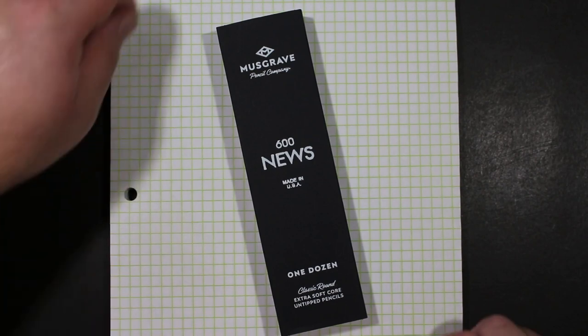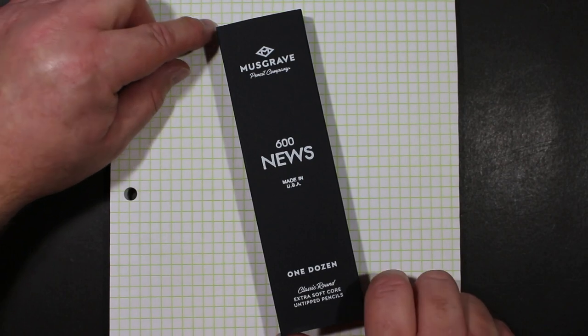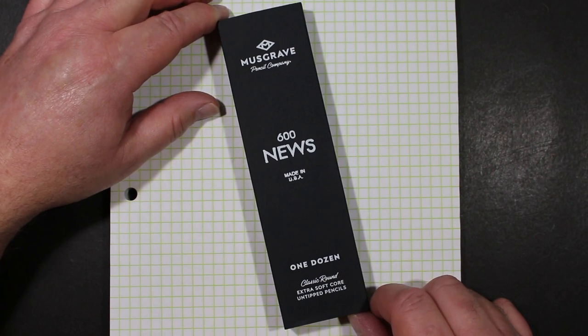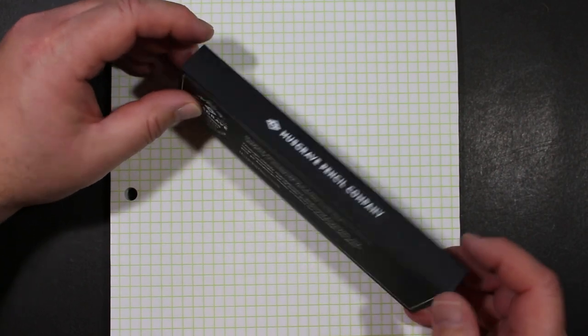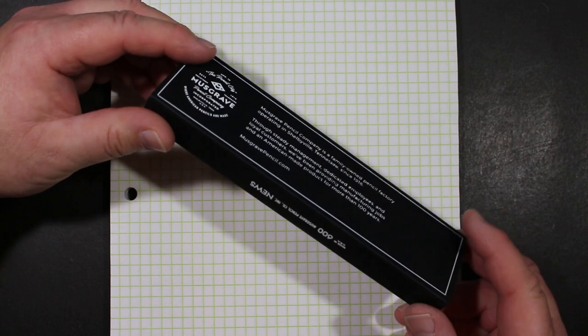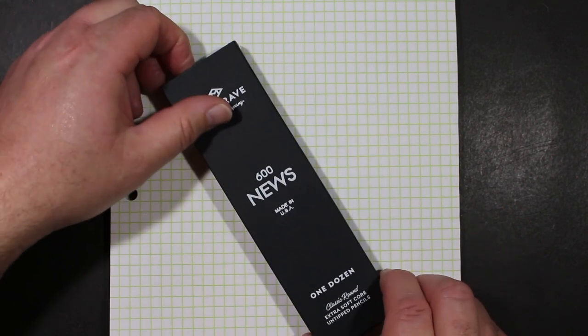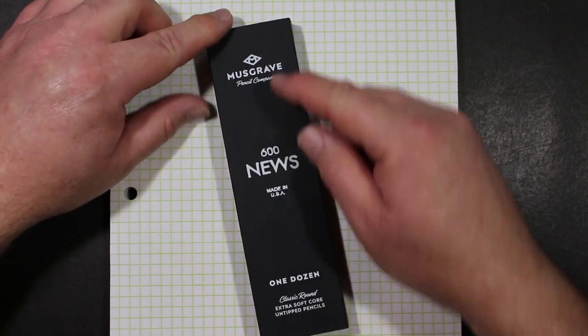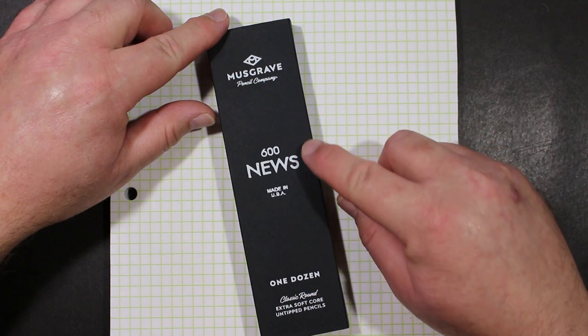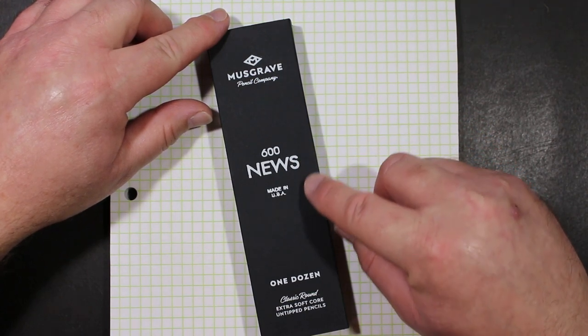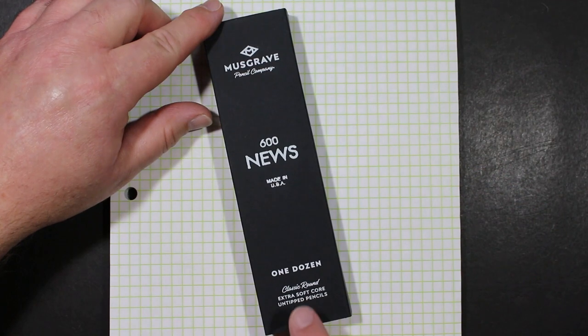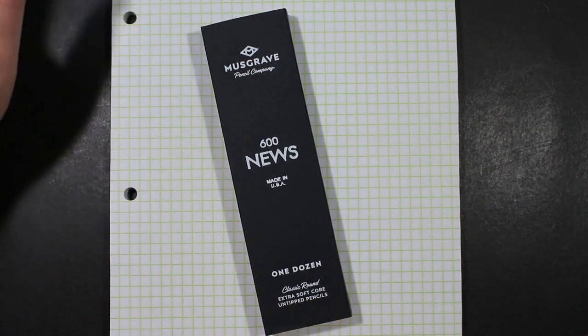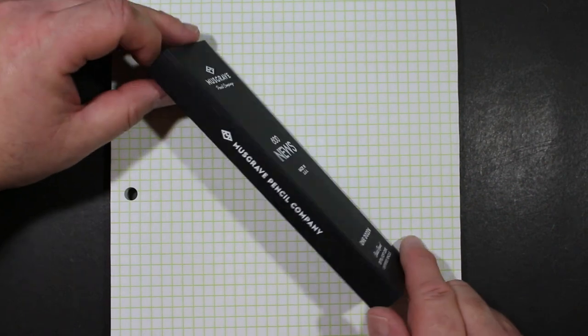Now they are in this very handsome box. I picked up this dozen on a recent order and it is black with white printing on it. And so it sort of mirrors the color scheme of the pencil itself. So you have the Musgrave M, Musgrave Pencil Company, 600 News, Made in USA, one dozen, classic round, extra soft core, untipped pencils. So that kind of tells it all right there